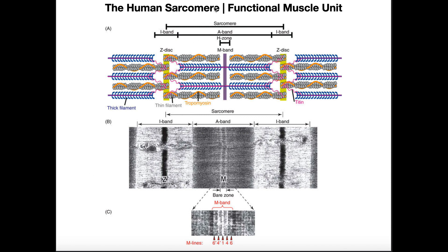What is a sarcomere? The sarcomere is the functional unit of a contracting muscle — we're talking about skeletal muscle here, although much of this applies to cardiac and smooth muscle as well. Skeletal muscle fibers are each filled with millions of sarcomeres. Some are arranged in parallel, but we're going to be looking at sarcomeres arranged in series.